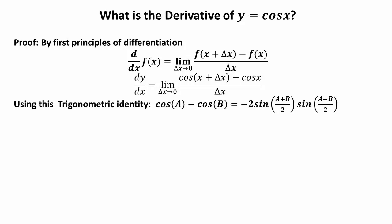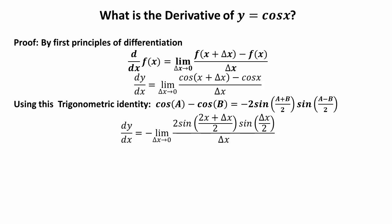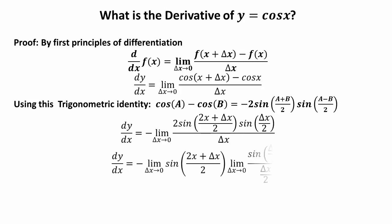Using the trigonometric identity cos(A) - cos(B) = -2 sin[(A+B)/2] sin[(A-B)/2], and taking A = x + Δx and B = x, substituting into the identity we get dy/dx = -limit as Δx→0 of 2sin[(2x + Δx)/2] · sin(Δx/2) over Δx. Simplifying: dy/dx = -limit as Δx→0 of sin[(2x + Δx)/2] · limit as Δx→0 of sin(Δx/2) over (Δx/2).